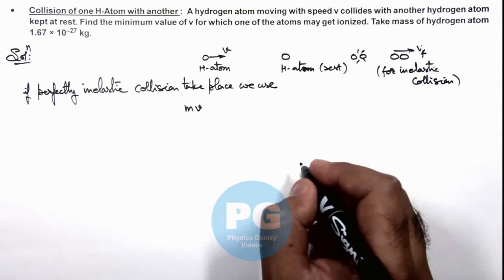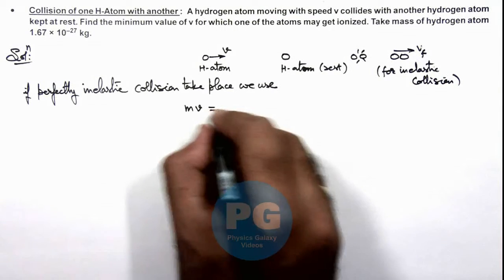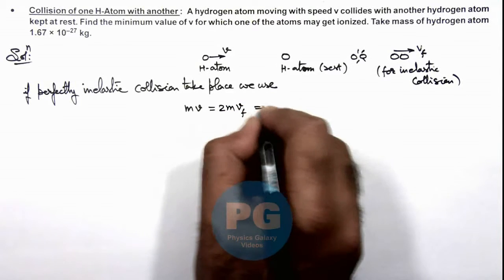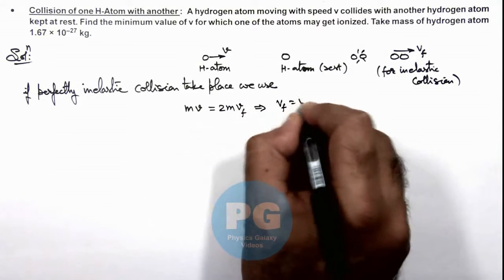So in this situation we can write the final momentum would be 2mvf, which gives us vf equals v/2.